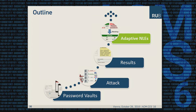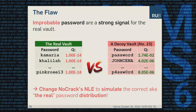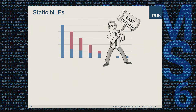Next I want to show how to fix the problem we found. The flaw is that improbable passwords are a strong signal for the real vault. For example, the password 'pinkrow13' was never observed during sampling from the decoy distribution, making it a strong indicator of the real vault. A straightforward fix would be changing NoCrack's distribution to simulate the real password distribution.